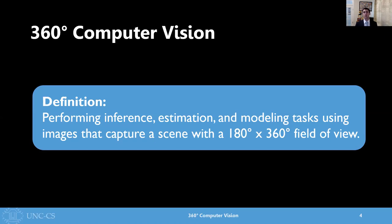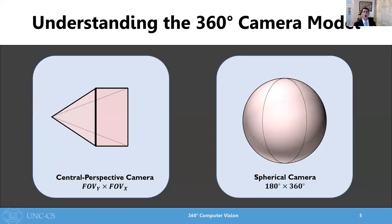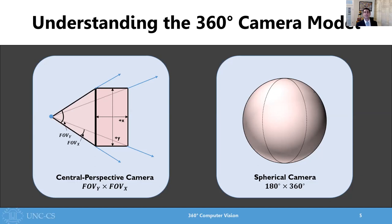To understand how this differs from the typical central perspective cameras that we're used to, it might help to consider how the 360 image is formed. On the left, you can see the standard illustration of a central perspective camera. In a central perspective camera, the image is formed via perspective projection. Rays are cast from a center projection out towards the world, and whatever they hit is projected back onto an image plane. How much of the world these images capture is dictated by the camera's field of view in the x and y direction, and this is a function of the camera's focal length, or the distance from the center of projection to the image plane.